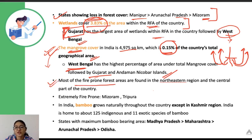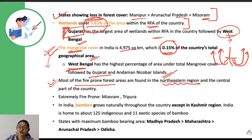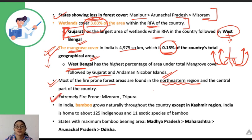Most fire-prone forest areas are found in the northeastern region. The India State of Forest Report 2019 provided information about forest fires, noting that extremely fire-prone forest cover is found in Mizoram, followed by Tripura.